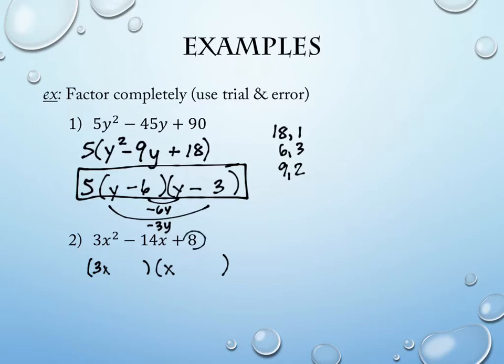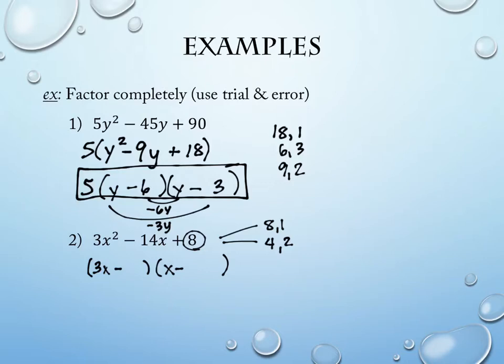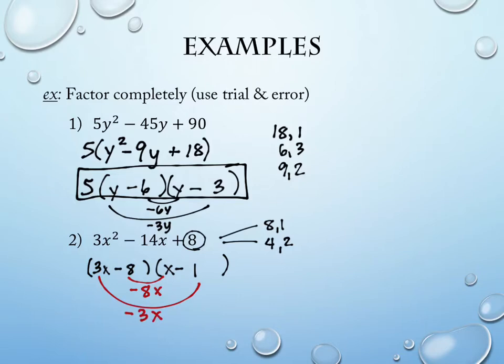That's fairly friendly because I don't have choices — it's 3 and 1. Unfortunately, the number 8 at the end has choices: I can do 8 and 1, or 4 and 2. I'll have choices at the end, and I need to make sure my signs are right. Positive at the end means the signs match. Negative in the middle means they're both negative. So I have something that's negative and negative, and I have four options.